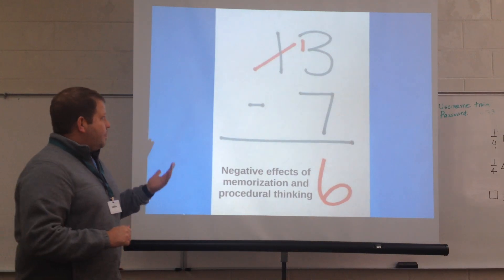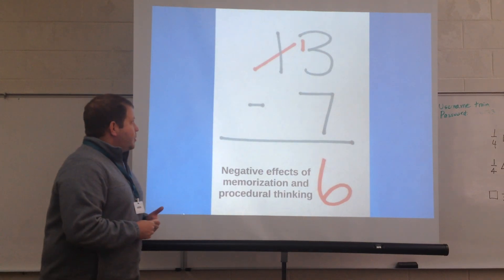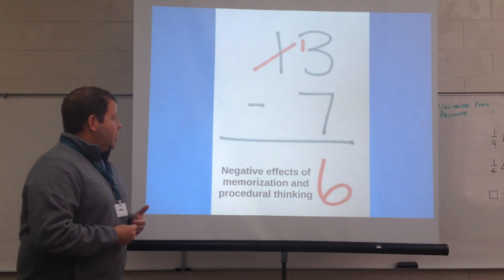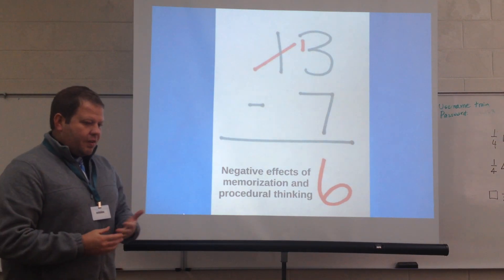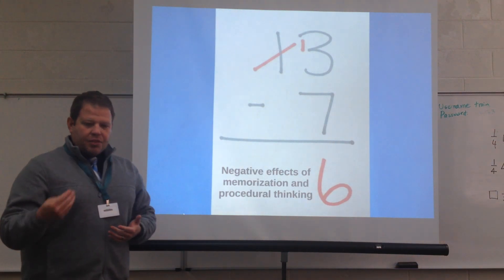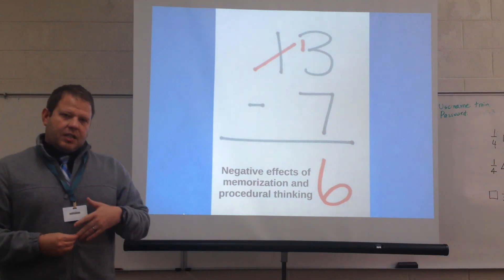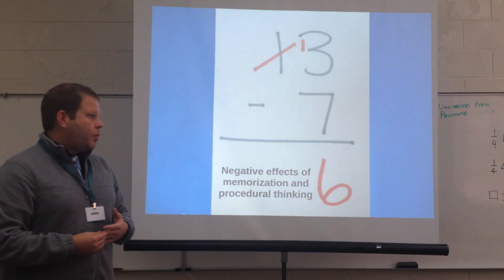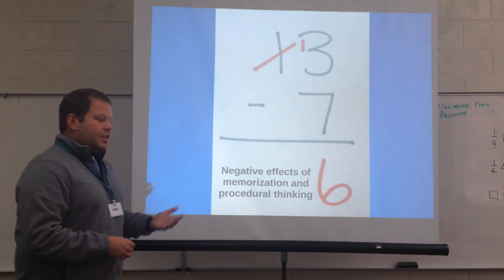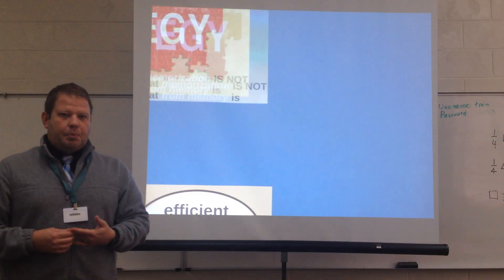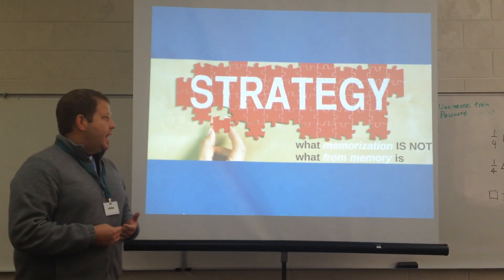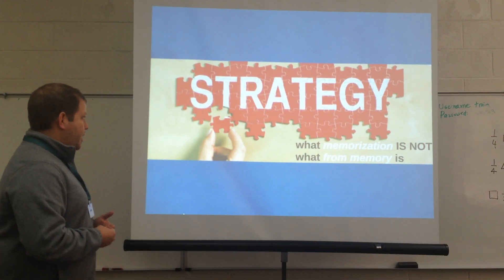Look at this example: a student subtracting 13 minus 7. What they do is say, if I have 3 I can't take away 7, so they go next door and borrow 1. This is a perfect example of the negative effects of memorization and that procedural thinking.